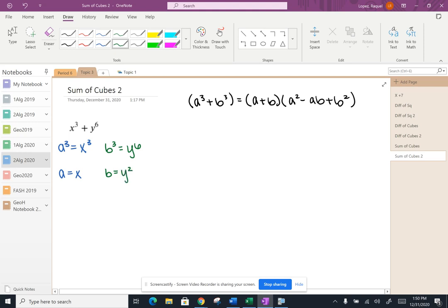Now that I know what a and b is, I can just go ahead and substitute those values in over here when I factor it. So I'm going to do it right beneath here. Instead of writing a, I'm going to write x because that's what a is. Instead of writing b, I'm going to write y squared because that's what b is.